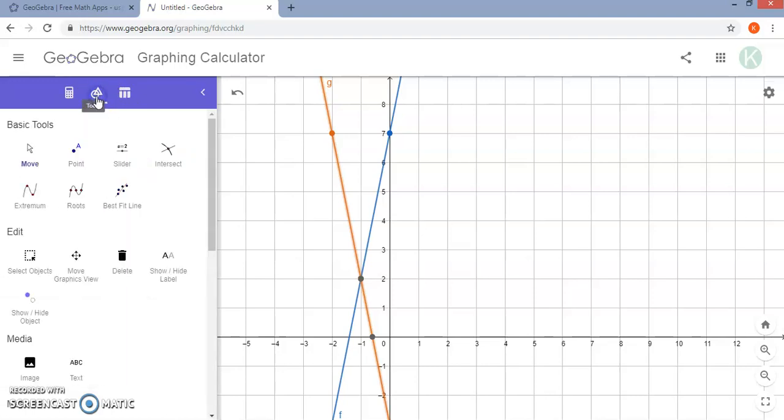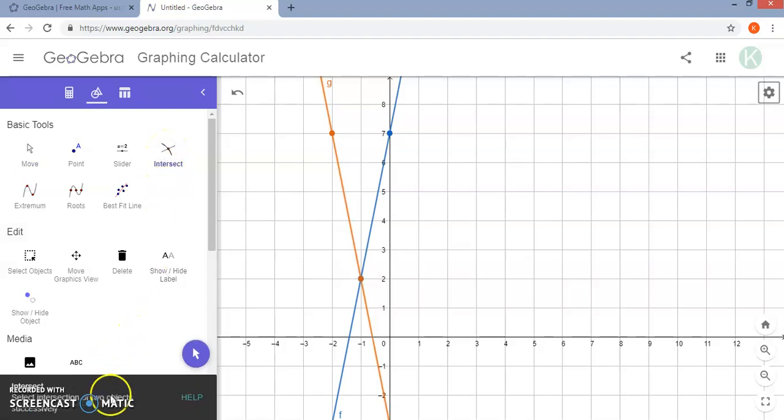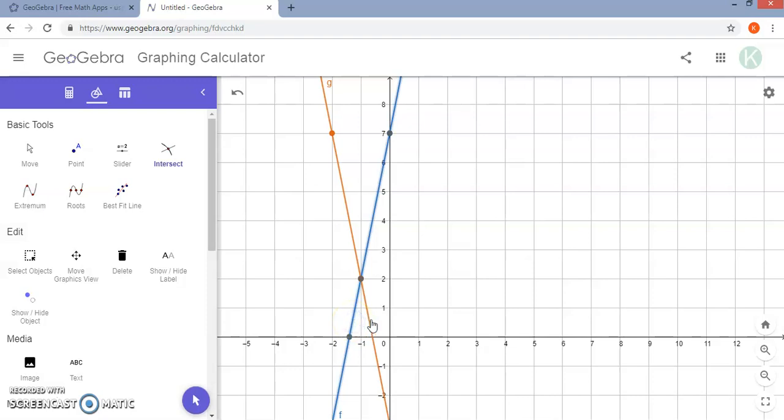If you go under tools, there are some other features that are convenient for functions. You'll notice the intersect tool. You can either select the intersection point, or you can select the two objects. So I can select both graphs, and then it will label that intersection point for me.